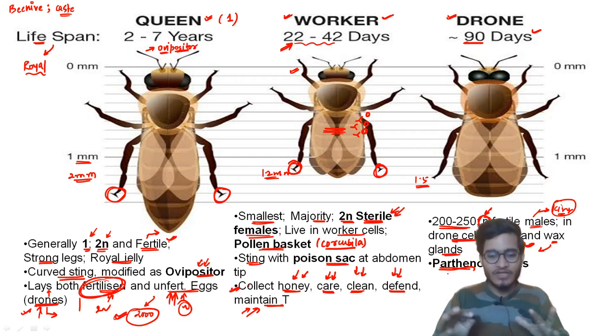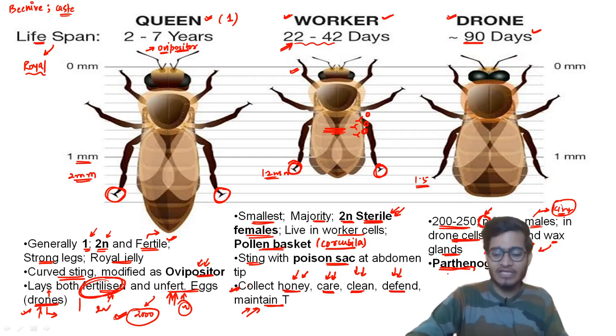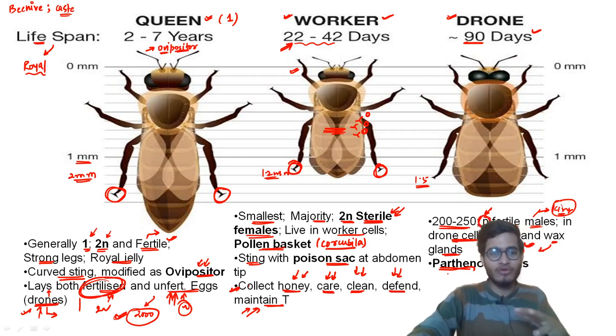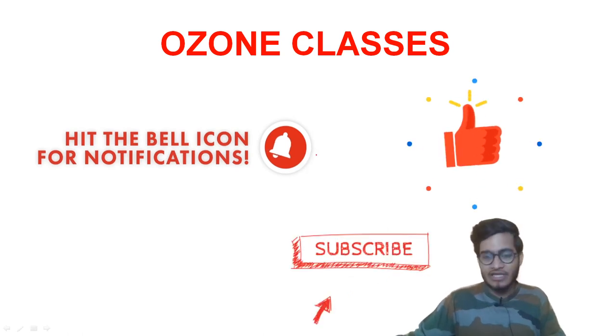These are some important features about bees and their caste distribution. The most superior is the queen, then drones who are also fertile, and then workers who are inferior in all cases — whether in size, way of working — they are always at the bottom. These are some important things to remember from this topic.